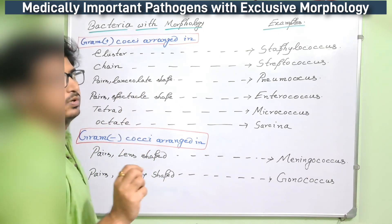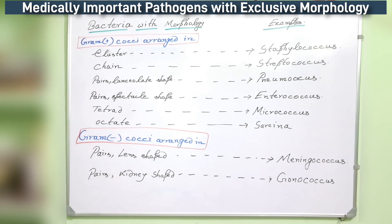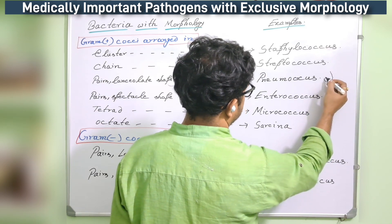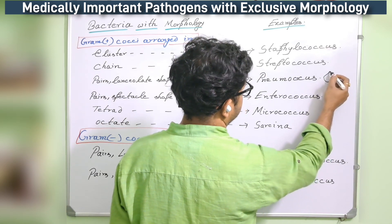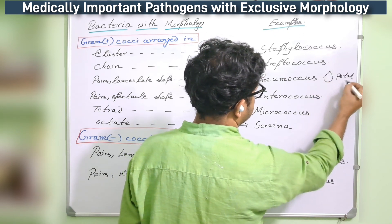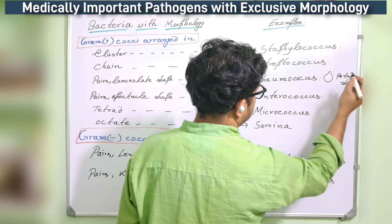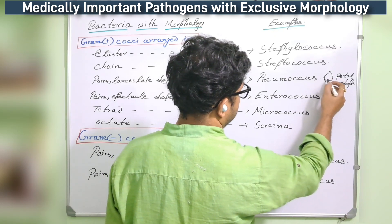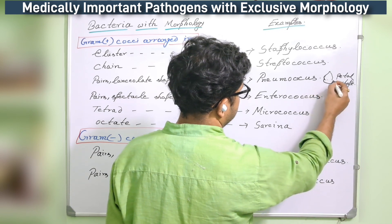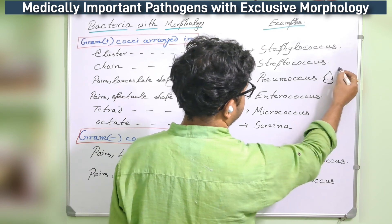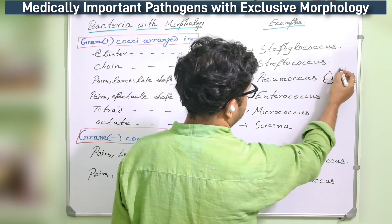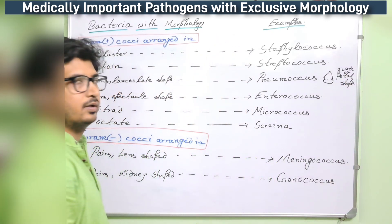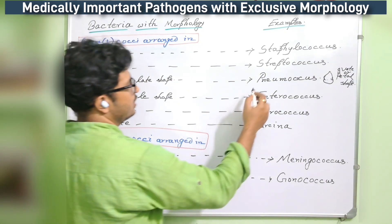The lancet or lancurate shape means a leaf-like or petal shape where the end portion is much wider than the middle portion — an ovoid or petal shape. This is called lancurate bacteria, and the perfect example is Pneumococcus.